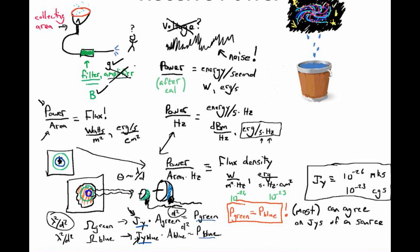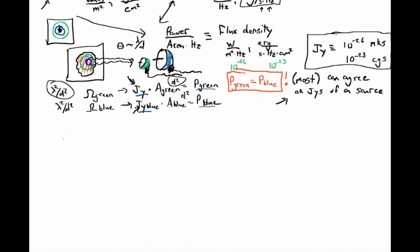So we established that most telescopes, as long as they aren't resolving the source — resolving means that their beam is smaller than the source they're looking at — can agree on the number of Janskys of that source. If unresolved, Janskys are your units of choice. Everybody can agree on the flux density of the source.